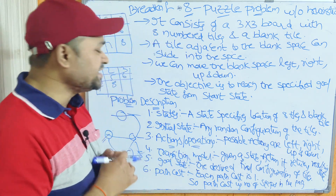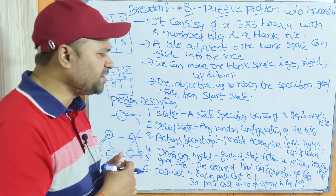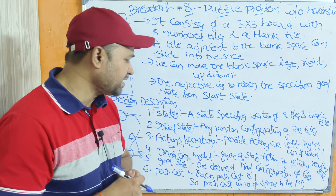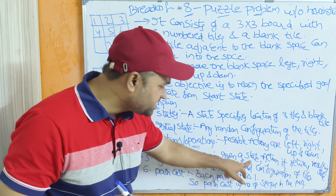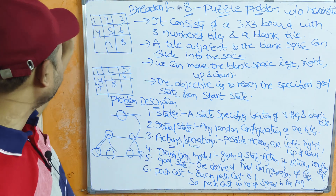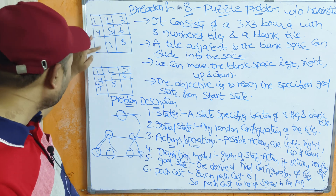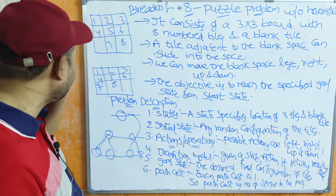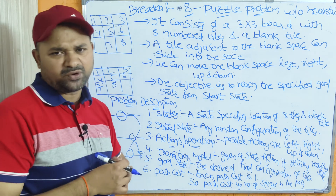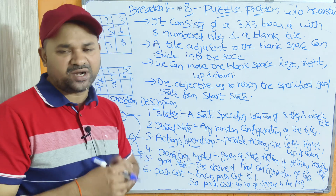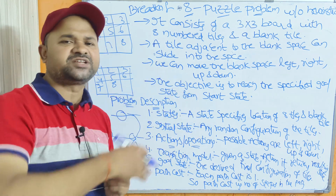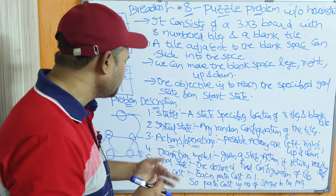Next, actions or operations. The possible actions are left, right, up, and down. Next, the transition model: given a state and an action, it returns the resulting state. For example, 4 can be moved towards the down, or 7 can be moved towards the left. In another scenario, 8 can be moved towards the right or 6 can be moved towards the down. That is called the transition model.